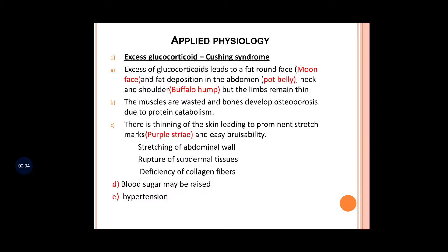Moon face refers to a fat, round face due to fat deposition. There is pot belly, and because of fat deposition in the neck and shoulders, there is buffalo hump. These are the three peculiar features of Cushing syndrome.